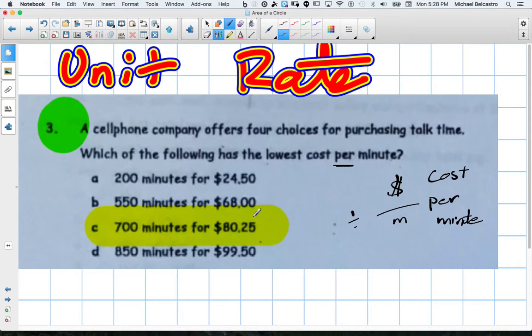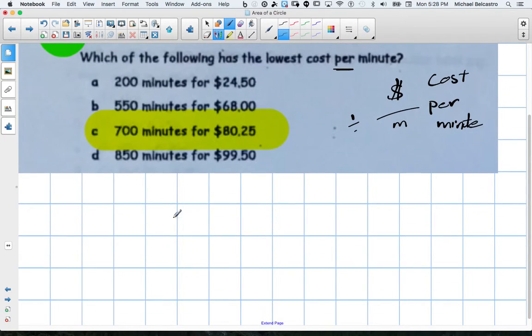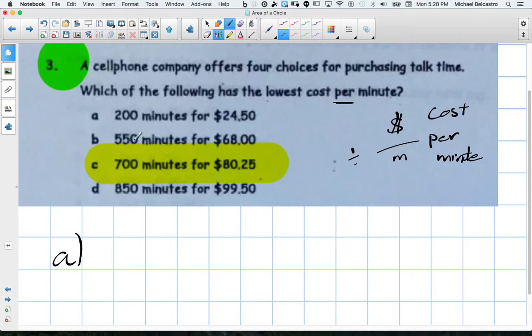So we need to find each of the rates for all of these, and we have to compare them. Okay, so I'm going to take value A, and I would set this up by saying $24.50 divided by 200. What is that per minute? So that's going to be also written like this, dollars per minute. That's how you write that as a rate.